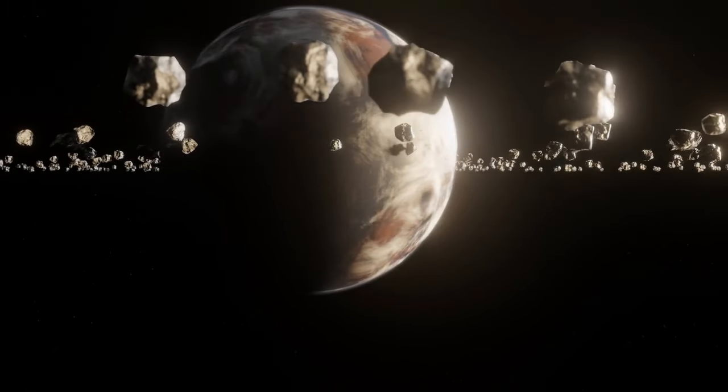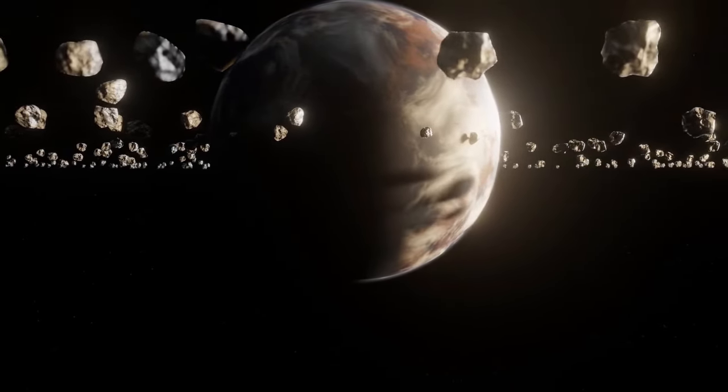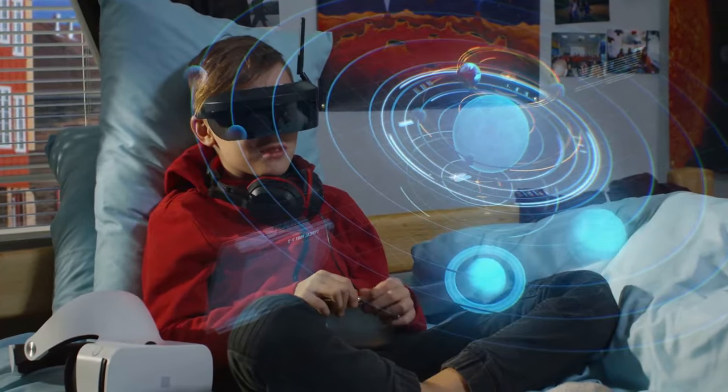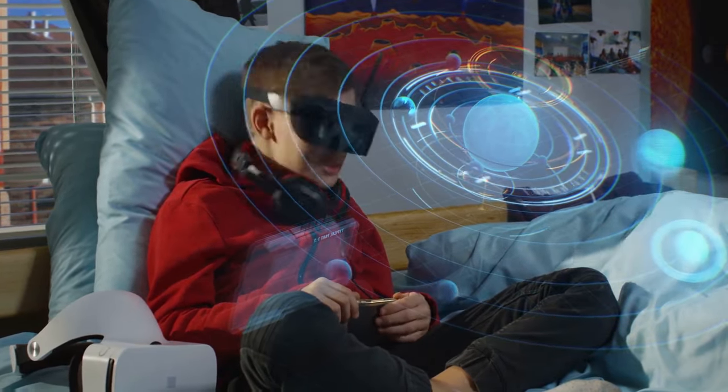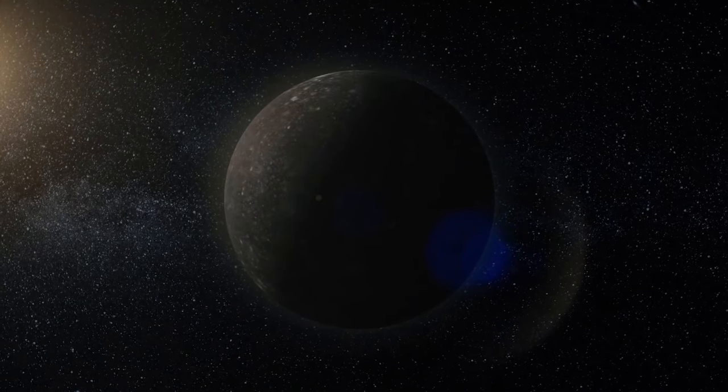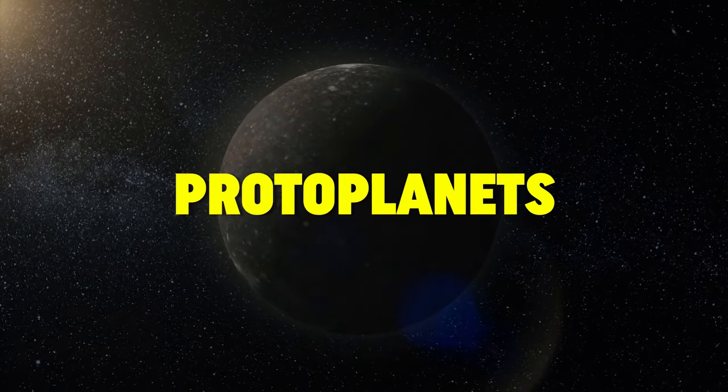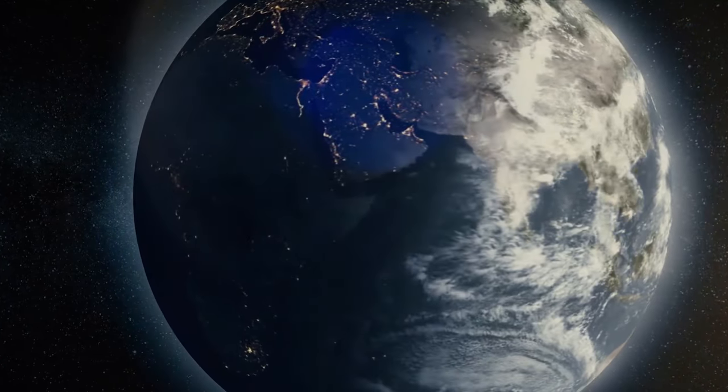As these bodies grew, their gravitational influence strengthened, accelerating the accretion process. Larger planetesimals attracted more material, leading to a runaway effect where the biggest bodies grew at a faster rate. Over millions of years, these increasingly massive objects, now known as protoplanets, dominated their local regions of space, clearing their orbits of smaller debris.